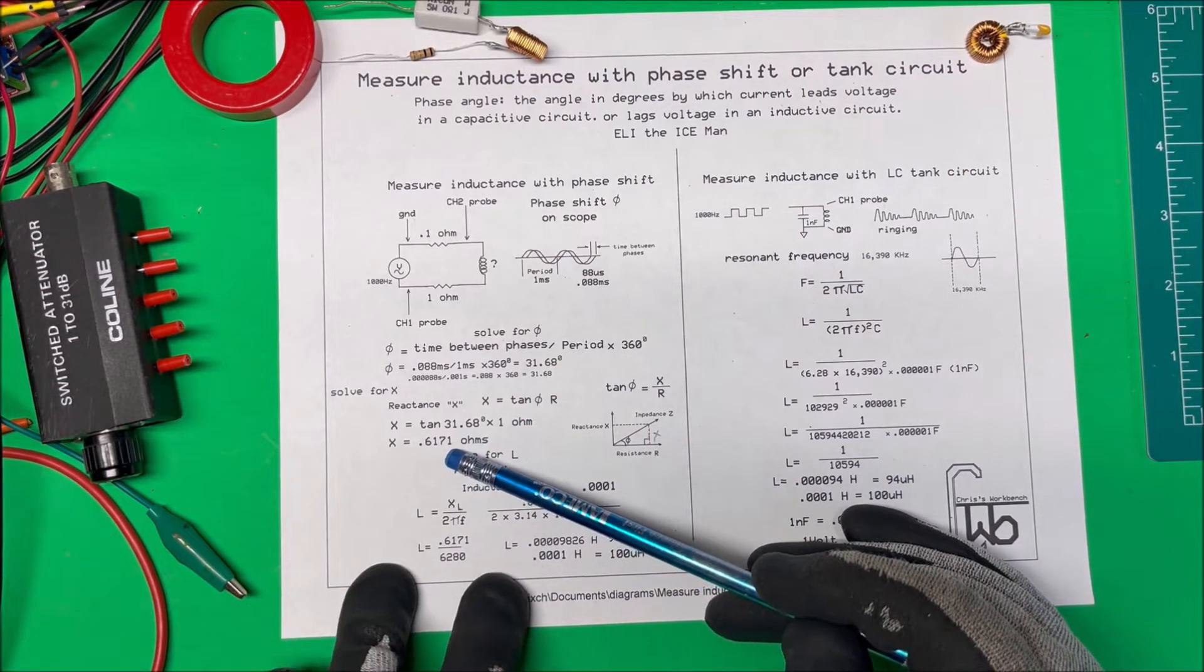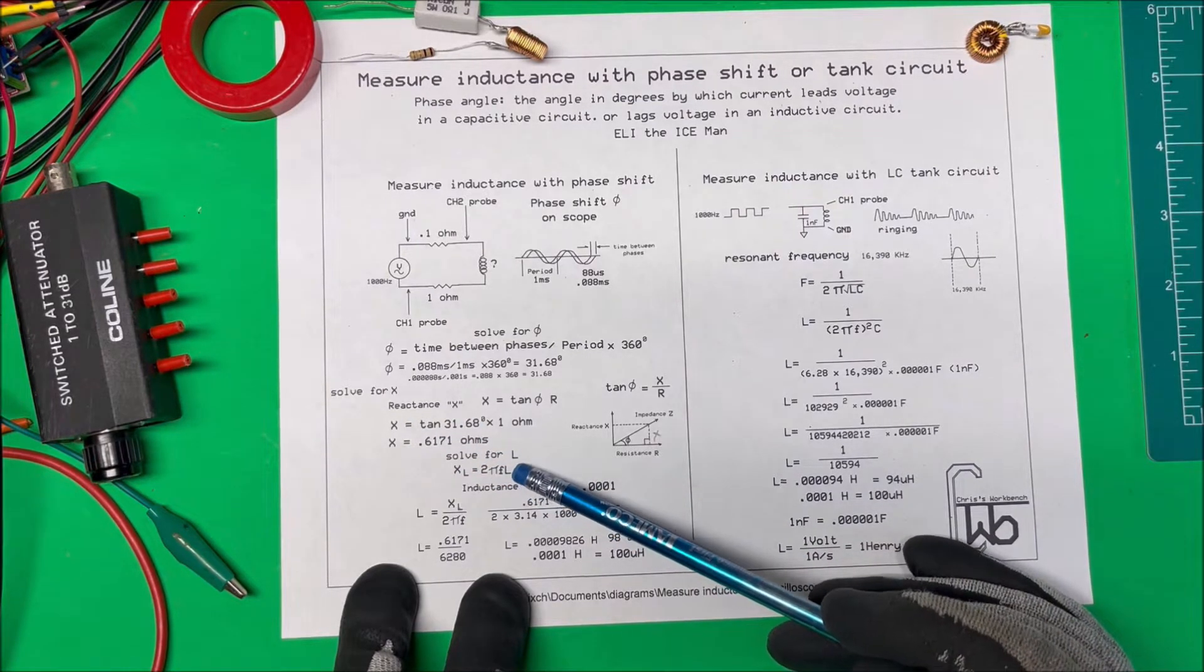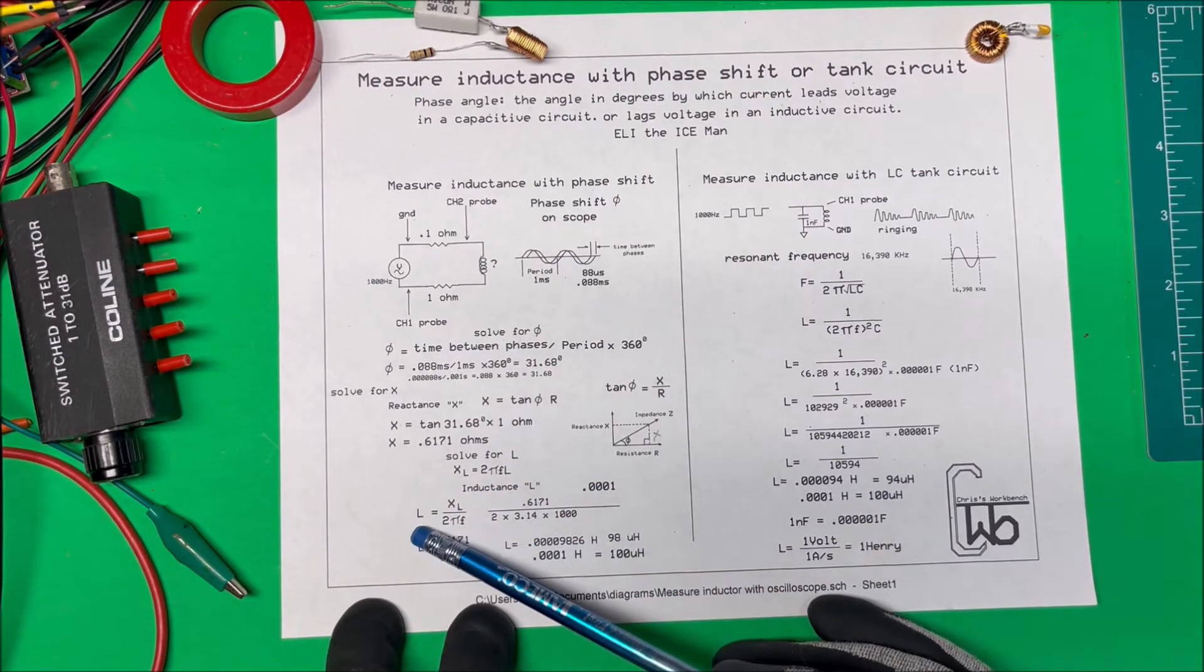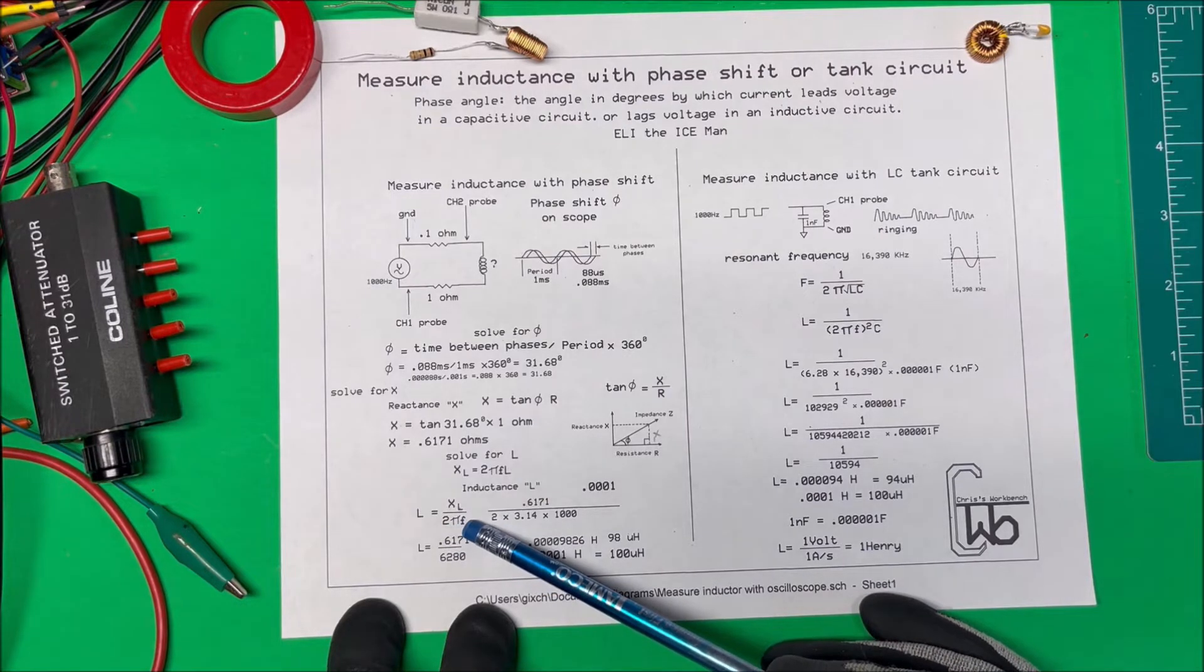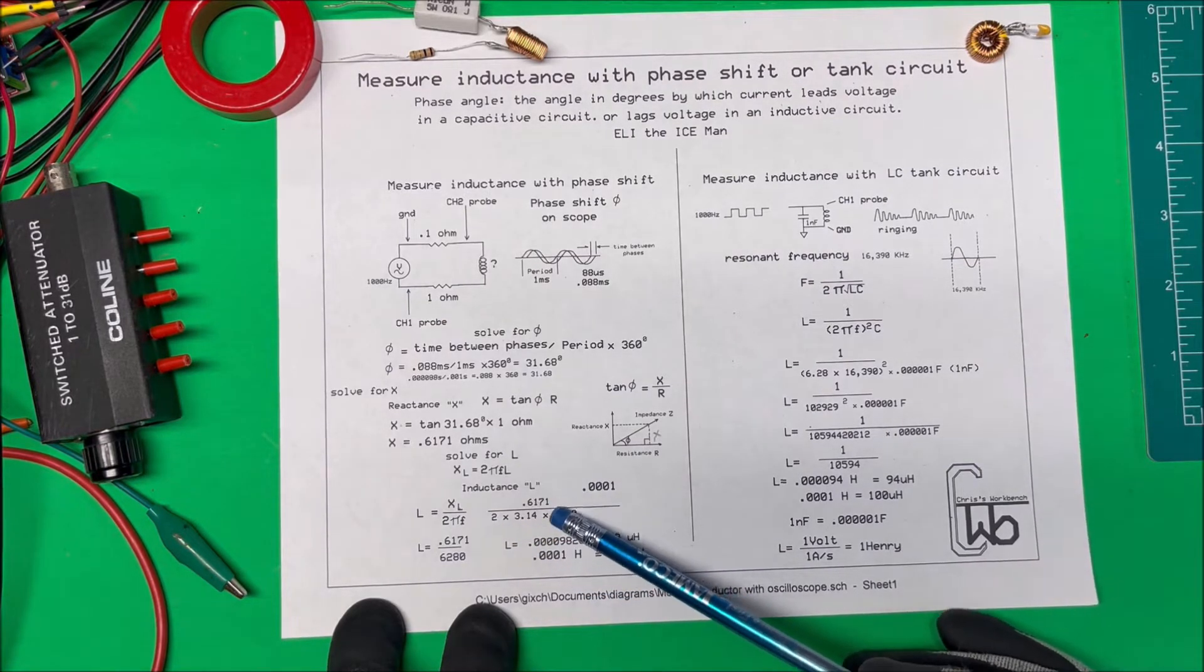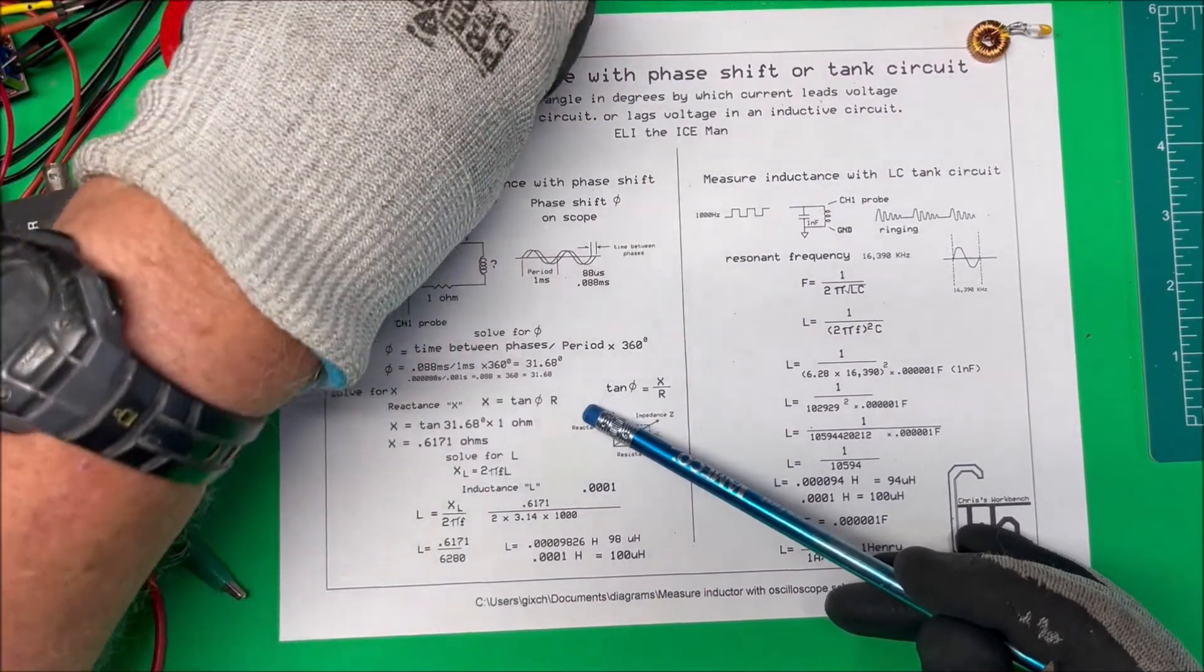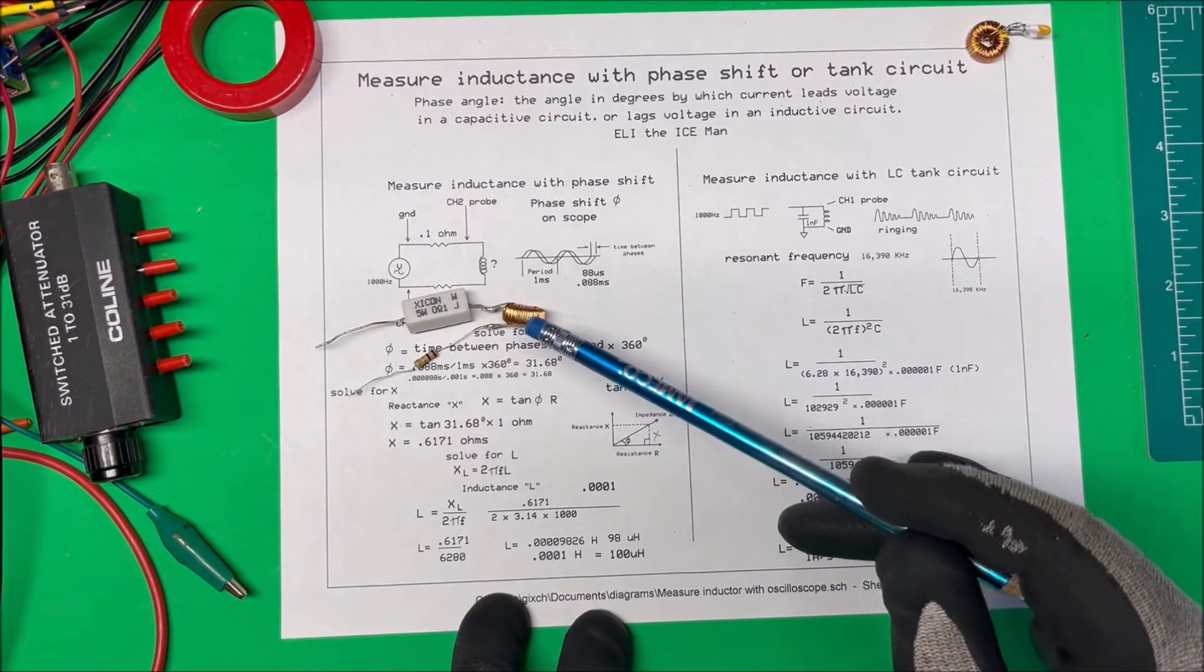Now we know our reactance and want to find the inductance. The formula for reactance is XL equals 2 pi times frequency times inductance. We manipulate that so L equals XL over 2 pi times frequency. We know the reactance and 2 pi times a thousand, so we divide that out and it comes out to 0.00098 henrys or 98 microhenrys. This is a 0.1 ohm resistor, this is the 1 ohm resistor, and this is the inductor which happens to be a 100 microhenry inductor, so 98 was pretty close.